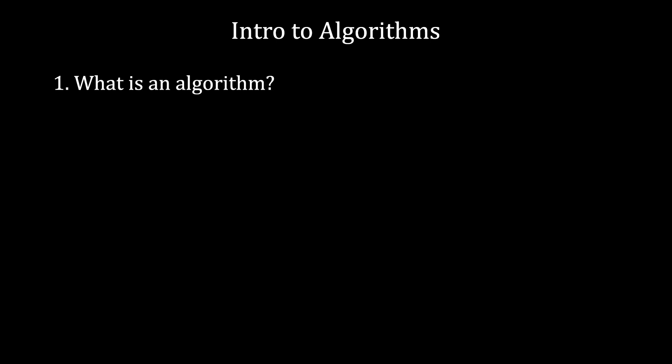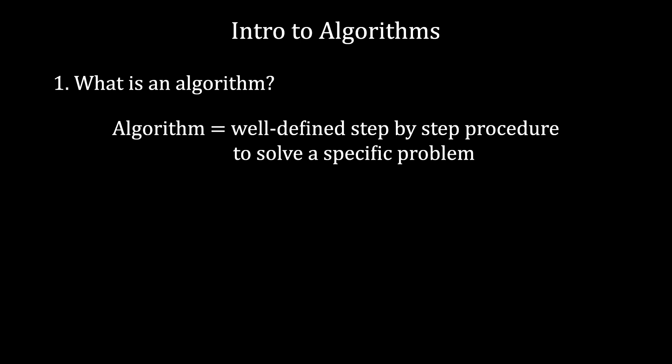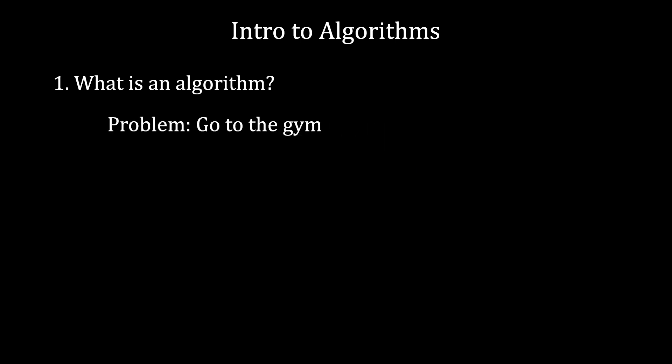Let's start with the first question. An algorithm is a well-defined step-by-step procedure of solving a specific problem. This means that in order to have an algorithm, we should have a problem. So let's take an example, let's say the problem is me going to the gym. Every time I go to the gym, I use the same algorithm, or let's call it routine.